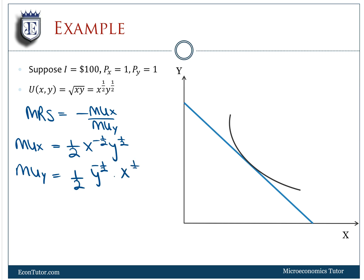Your MRS is going to be a ratio of these two with a negative sign. So it's X to the negative half, Y to the one half, over one half X to the one half, Y to the negative one half. When I simplify this, the halves are going to get cancelled out.